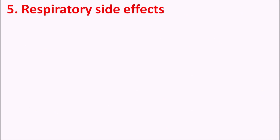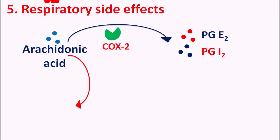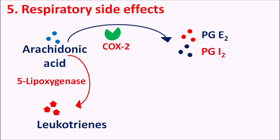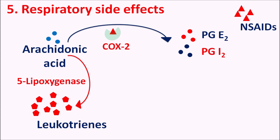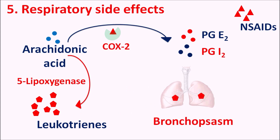The fifth side effect is respiratory side effects. Arachidonic acid is converted into prostaglandins such as PGE2 and PGI2 via the COX-2 pathway, and some arachidonic acid can also be converted into leukotrienes via the 5-lipoxygenase pathway. When NSAIDs block the COX-2 pathway, the 5-lipoxygenase pathway becomes more pronounced, resulting in greater production of leukotrienes and their accumulation in the body. These leukotrienes affect the respiratory system — when accumulated in the lungs they produce bronchospasm, increasing the risk of asthma. NSAIDs should be given carefully to asthmatic patients, and aspirin in particular can produce aspirin-sensitive bronchospasm due to leukotriene accumulation.